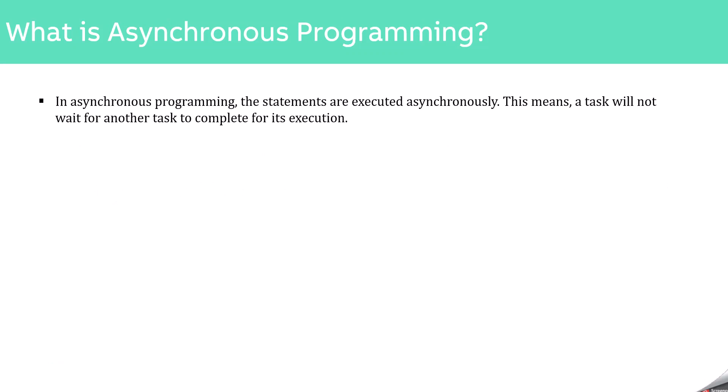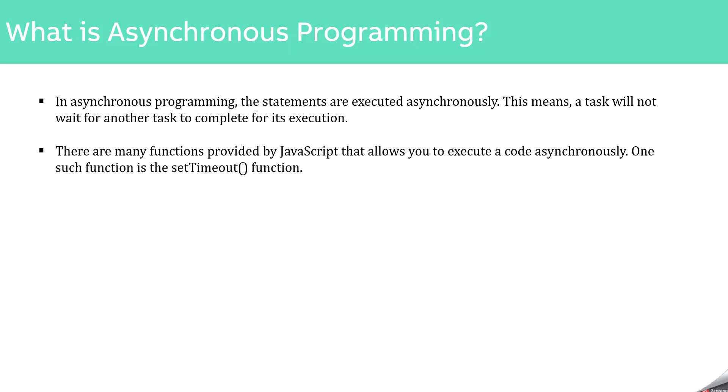Now let's talk about asynchronous programming. In asynchronous programming, the statements are executed asynchronously — this means a task will not wait for another task to complete for its execution. There are many functions provided by JavaScript that allow you to execute code asynchronously, and one such function is setTimeout. The setTimeout function runs asynchronously, meaning it does not block the execution of further JavaScript code. Let's understand this with an example.